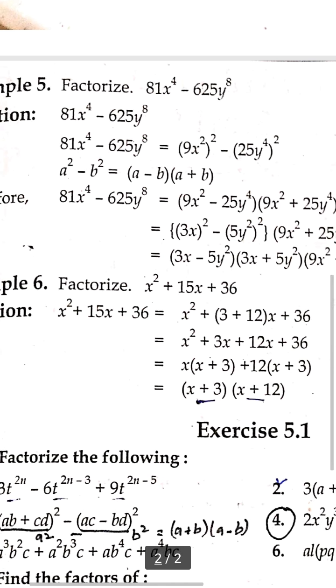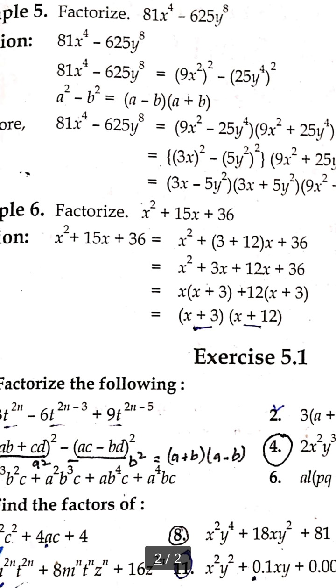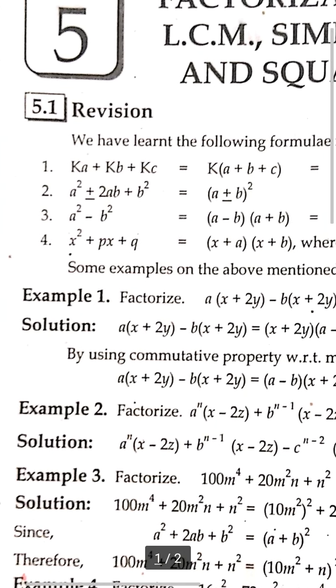Example 6: Factorize X² + 15X + 36. Here we use middle term break factorization. We need factors of 36 that add to 15. These are 3 and 12. So X² + 3X + 12X + 36 = X(X + 3) + 12(X + 3) = (X + 3)(X + 12).